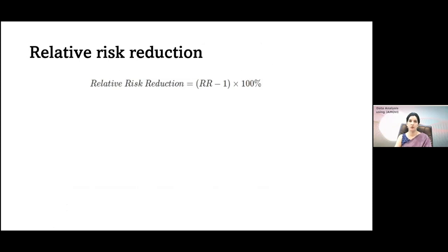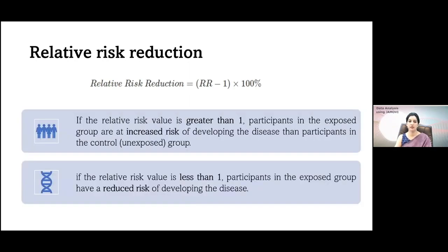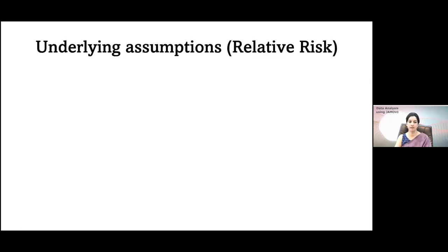How do we define relative risk reduction? If you subtract one from the relative risk and multiply by 100, it is known as the relative risk reduction, depending on the sign. If the relative risk value is greater than one, participants in the exposed group are at increased risk of developing the disease. If it is less than one, participants in the exposed group have reduced risk of developing the disease.